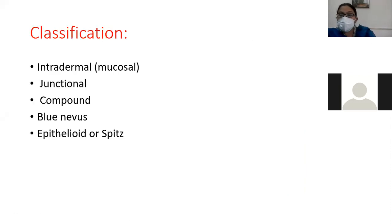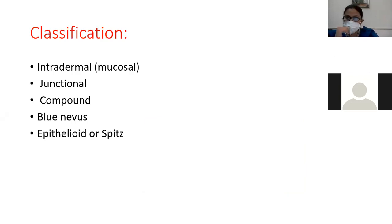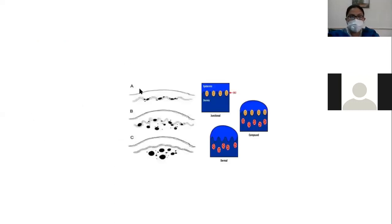The classification of nevus may be asked in your MCQs or in your viva. Nevus is classified into different types: intradermal nevus, junctional nevus, compound nevus, blue nevus, epithelioid or Spitz nevus, and dysplastic nevus. In a junctional nevus, clusters or nests of melanocytes are present at the dermo-epidermal junction, as seen in picture A.